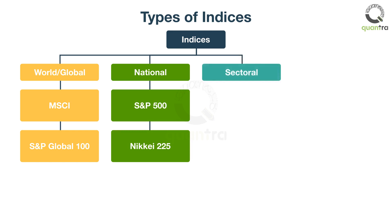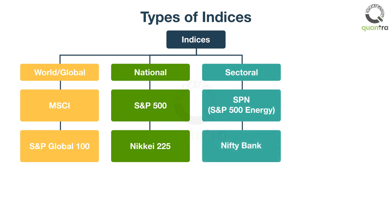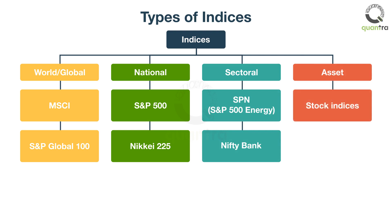Then there are sectoral or industry indices, which represent the performance of a particular sector in a given financial market. For example, the S&P 500 Energy, which tracks the energy sector in the US, and Bank Nifty in India, that tracks the banking sector. Indices are also classified based on the assets they track — for example, indices that track a basket of stocks are known as stock indices, whereas those tracking commodities are known as commodity indices. Also, an exchange can have multiple indices, such as one broad-based index and multiple sectoral indices, or a combination of them.